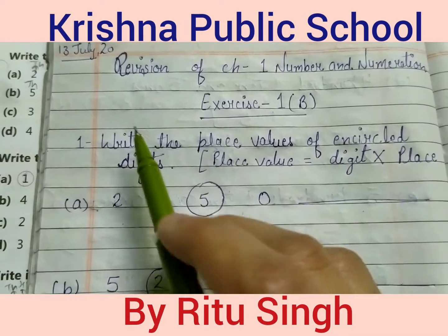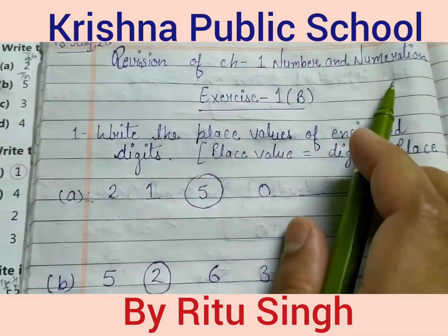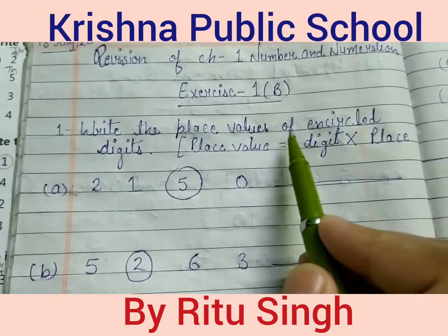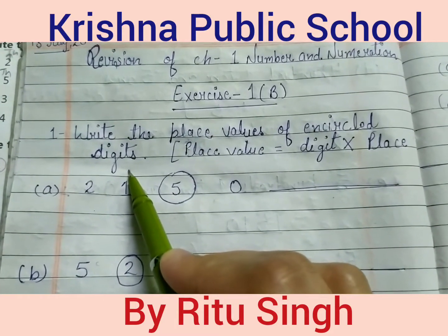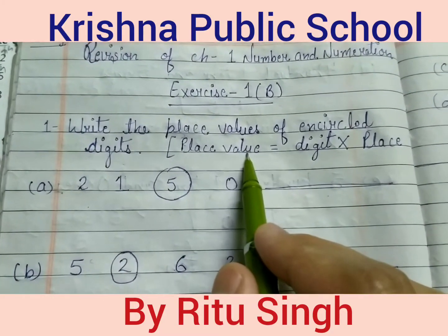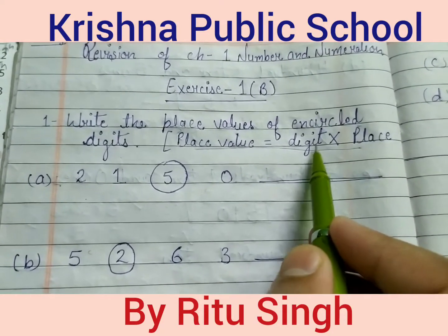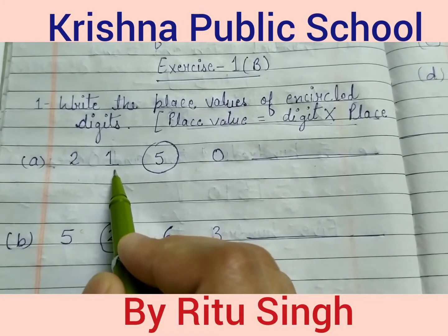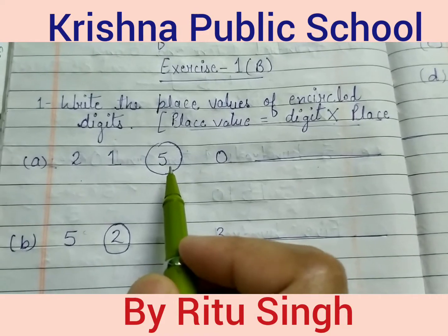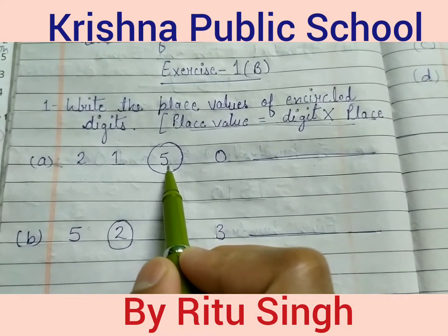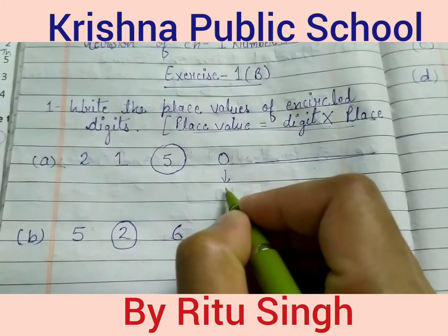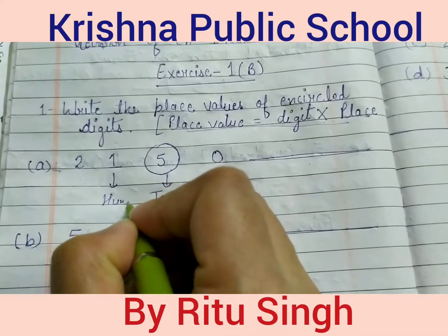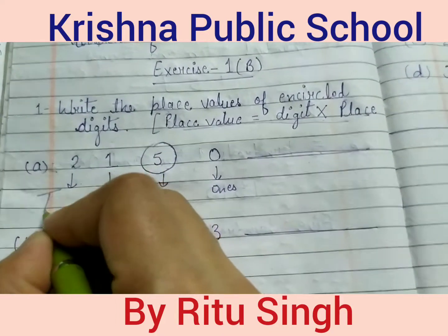Good morning class. Third revision of Chapter 1, Number Enumeration, Exercise 1b, Question 1 — write the place values of encircled digits. The place value formula is: digit into place. For a 5-digit number, this is the ones place, this is the tens place, this is the hundreds place, and this is the thousands place.